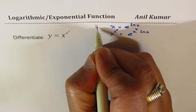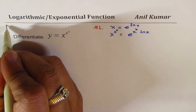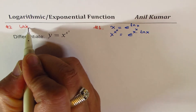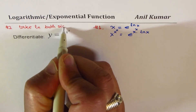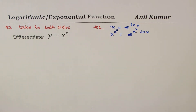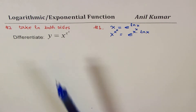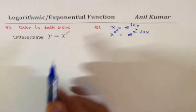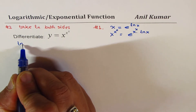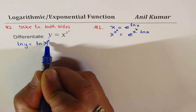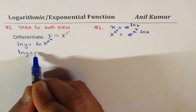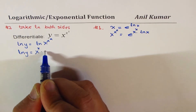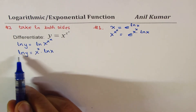Now let me show you method two, in which we will take the natural log of both sides. This is the standard method for solving such exponential equations. So we write ln y equals to ln of x to the power of x to the power of x. Using the log rules, the power comes down as a coefficient, so we write this as x to the power of x times ln x.